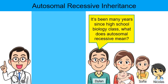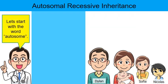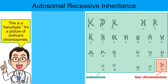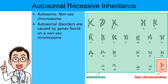It's been a lot of years since high school biology class — what does autosomal recessive inheritance mean? The doctor says let's start with the word autosome. Here is a karyotype — a picture of a person's chromosomes, perhaps Joshua's chromosomes. The X and Y chromosomes are the sex chromosomes of a male. The other chromosomes, pairs 1 through 22, are called autosomes — non-sex chromosomes with no genes influencing gender. Autosomal disorders are caused by a gene found on one of these 22 non-sex chromosomes.